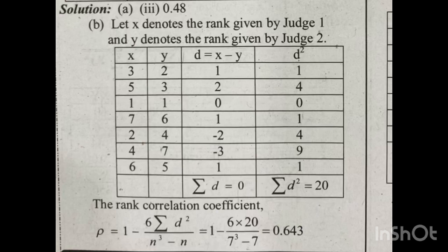That is the correlation. It is a positive correlation. The ranks given by Judge 1 and Judge 2 are positively correlated, meaning both judges have a similar sense of aesthetic judgment in evaluating the painting competition.